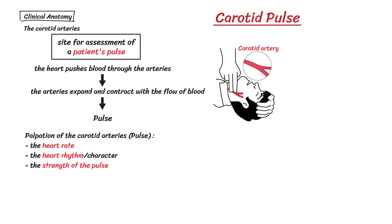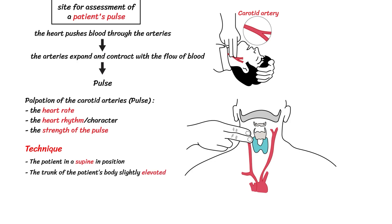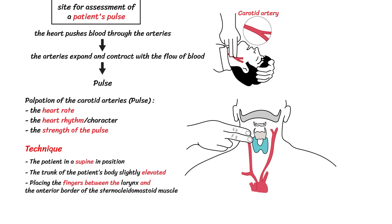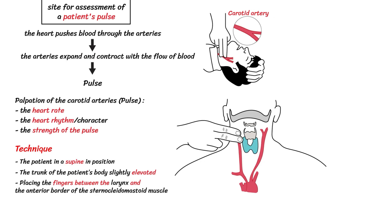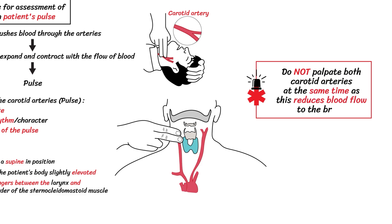The carotid arterial pulses are best examined with the patient supine and the trunk slightly elevated, and is measured by placing the fingers behind the larynx and the anterior border of the sternocleidomastoid muscle. It is very important to not palpate both carotid arteries at the same time, as this reduces blood flow to the brain.